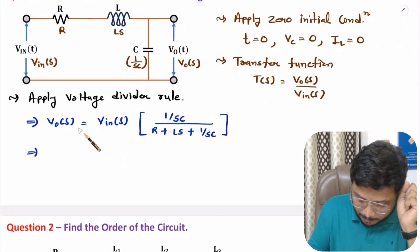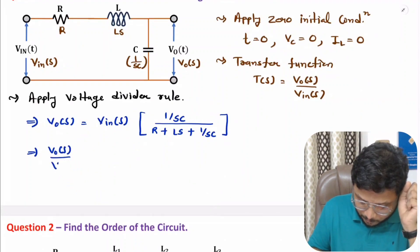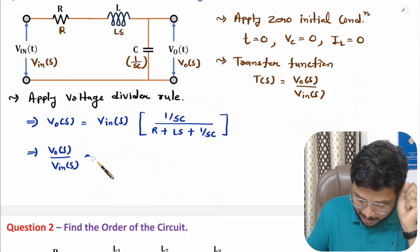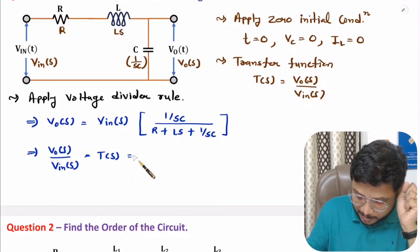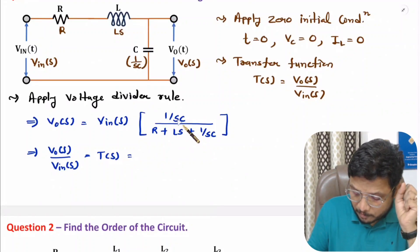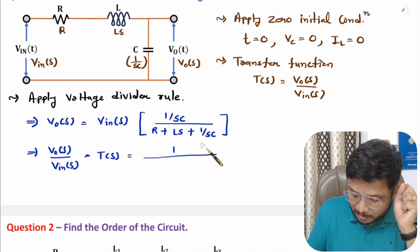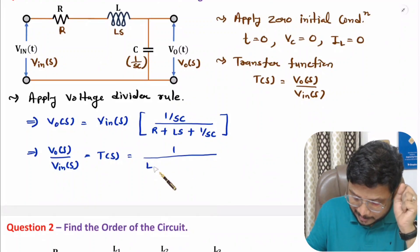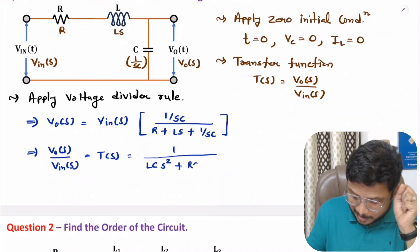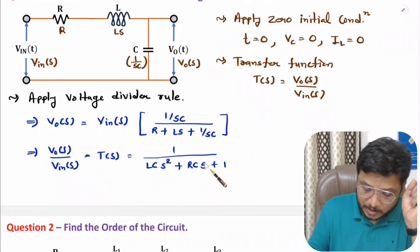The transfer function is the ratio Vo(S) / Vin(S). We need to simplify this expression. If we take the LCM of SC, then SC cancels from numerator and denominator, leaving 1 in the numerator. In the denominator, SC multiplies LS to give LC·S², and SC multiplies R to give RC·S, plus 1. So the transfer function of this RLC circuit is 1 / (LC·S² + RC·S + 1).